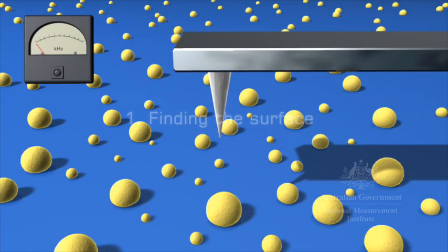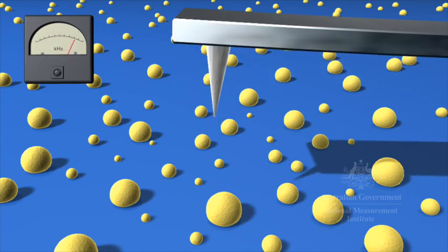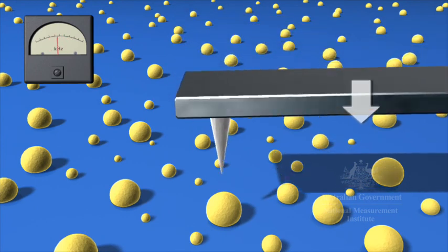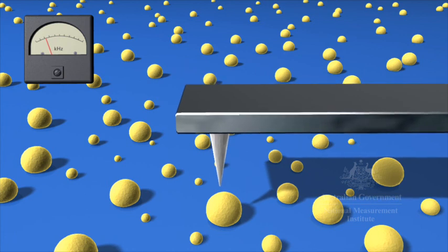The microscope's cantilever is activated to vibrate at resonance. As it is lowered, attractive forces between the tip and the sample alter the cantilever vibration.